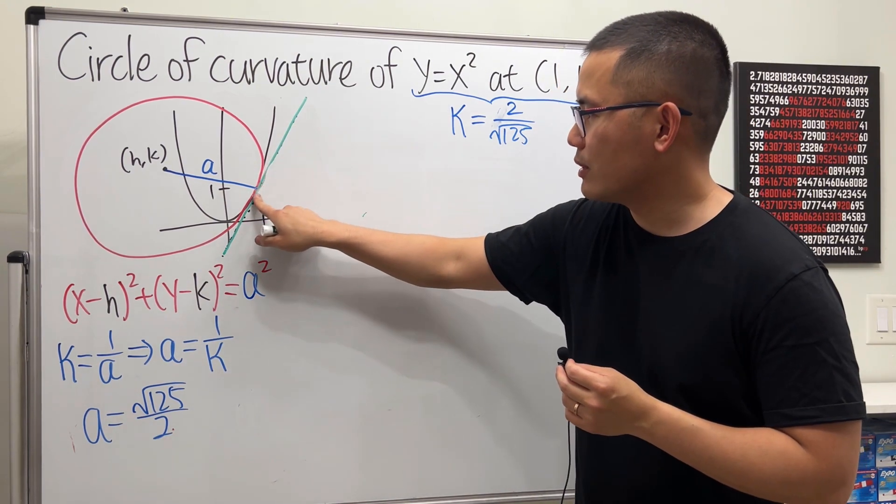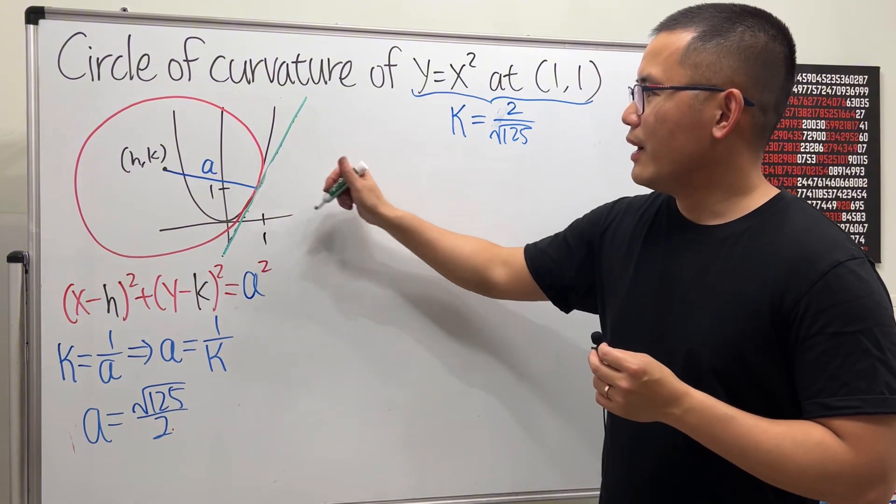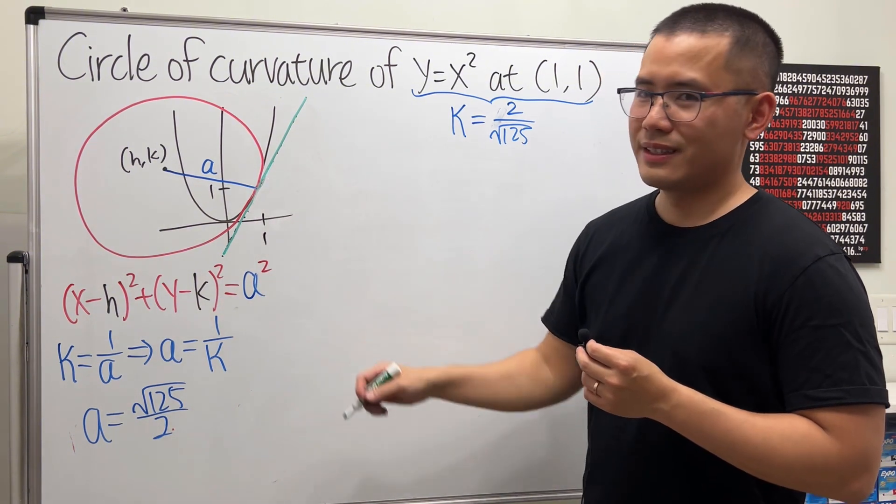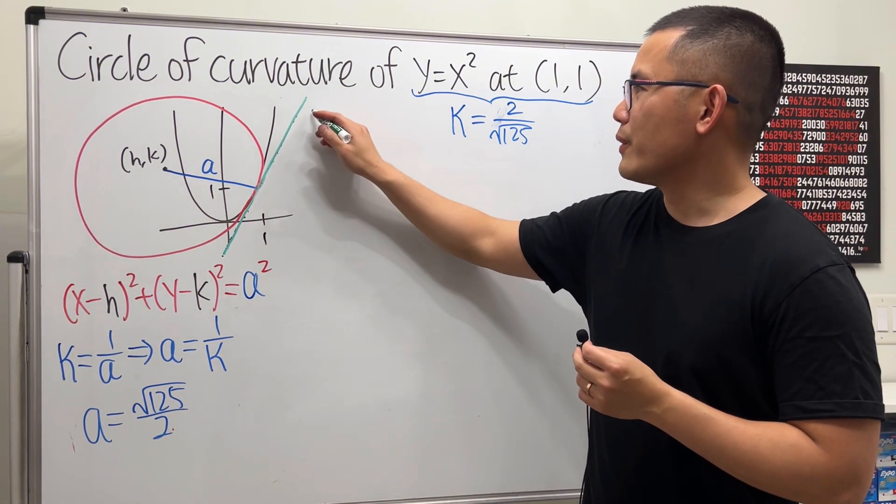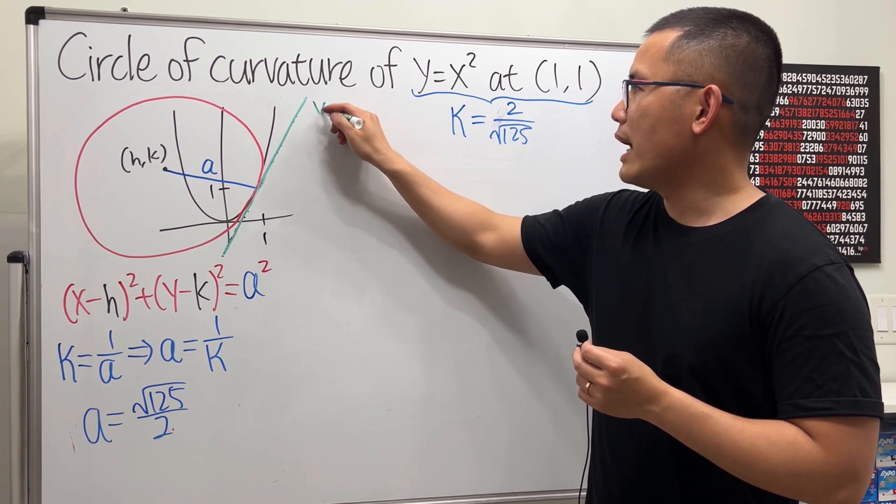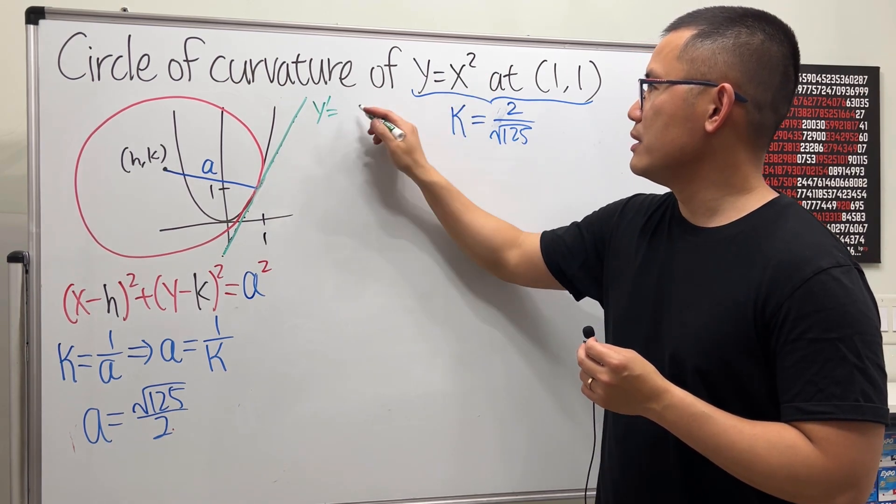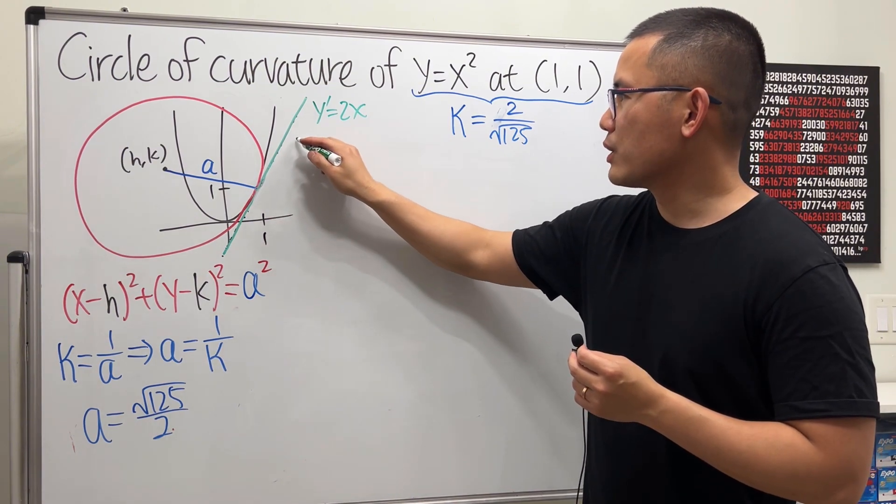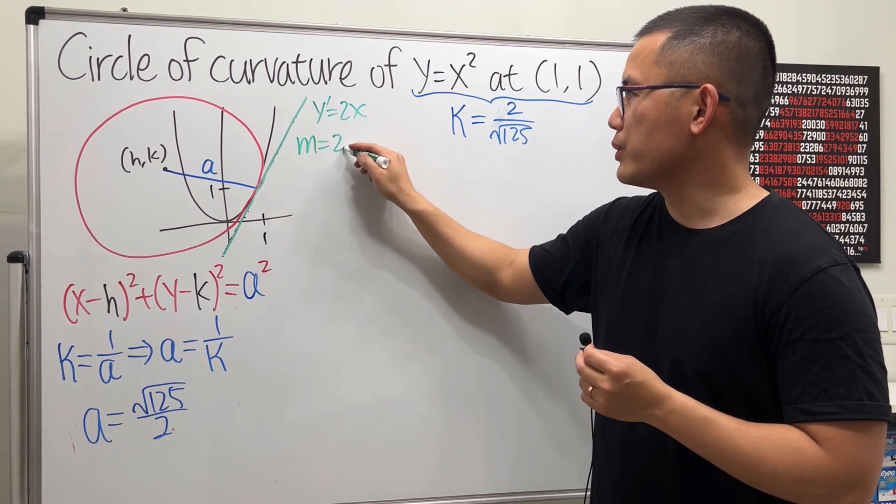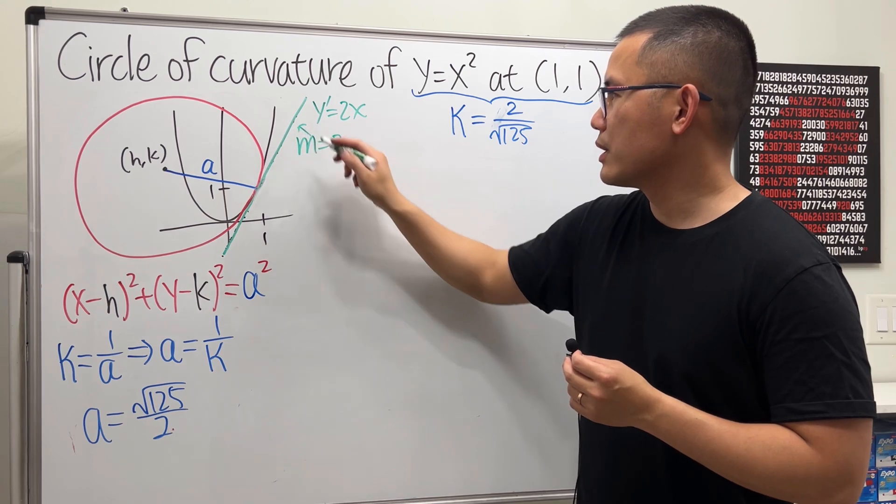All right, what's the slope of the tangent line? The derivative, right? So let's see. y' is just going to be 2x. At x equals 1, so the slope m is just equal to 2 for this line. Good.